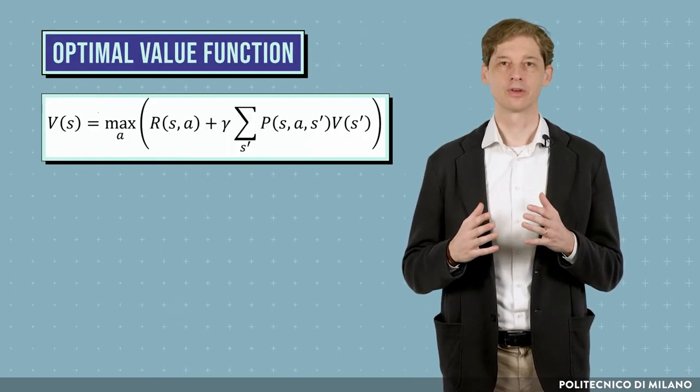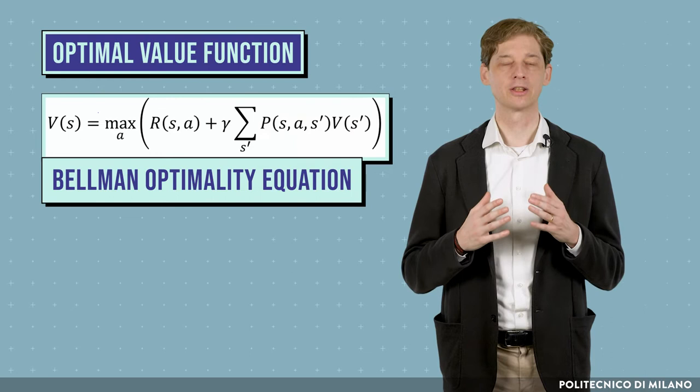As done for the value function of a policy, we can write a recursive equation also for the optimal value function, using the so-called Bellman Optimality Equation.